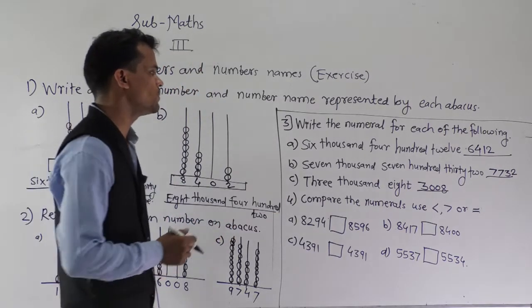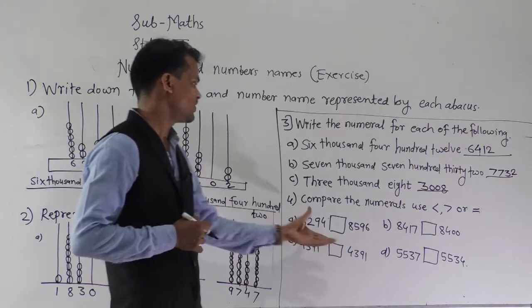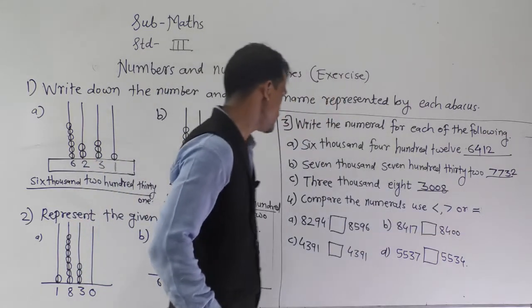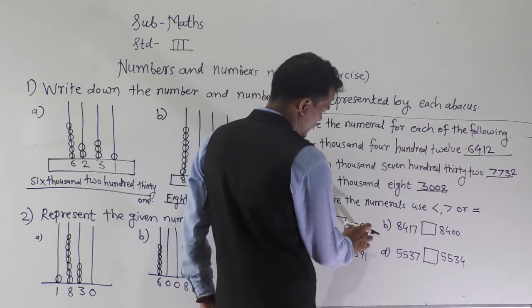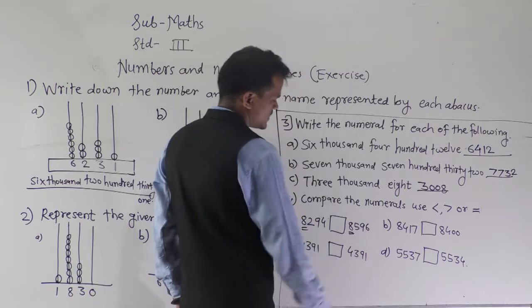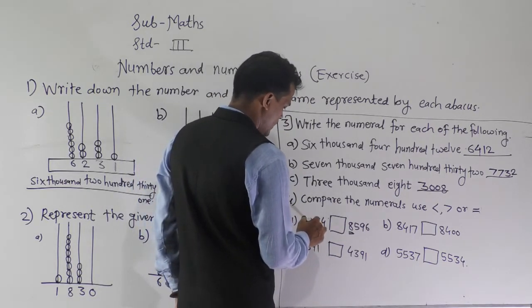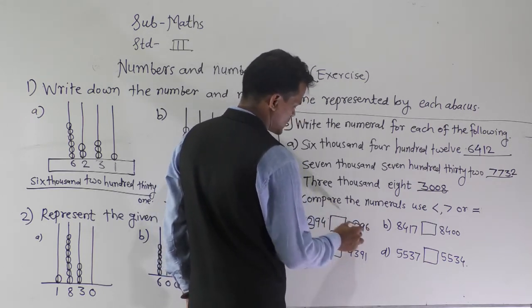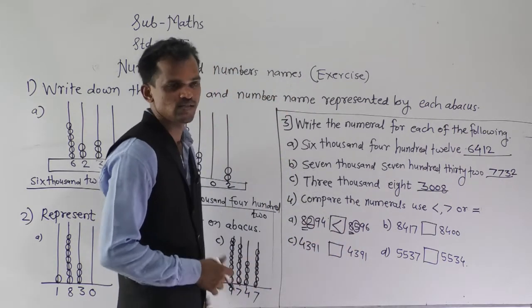Next question: compare the numbers using greater than, smaller than, or equal to signs. Compare 8294 and 8596. The thousands place digit is the same, so compare the hundreds place digits: 2 and 5. Since 5 is greater than 2, this number is greater than the other — so 8596 is greater than 8294.